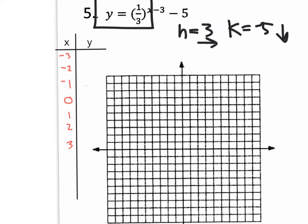There's my XY table, and notice that my inputs are in consecutive integer order: negative three, negative two, negative one, zero, one, two, three. That makes it really easy to plug in zero, ignoring H and K, into the parent graph. When you plug in zero, you get one out. When you plug in one, you get one-third. Or you could simply take the base one-third and use it to get the rest of your outputs — you can only do that because the inputs are in order. So if I take the output one and multiply it by one-third, I get one-third.